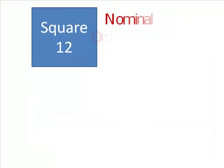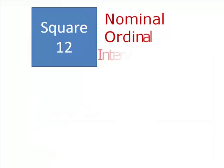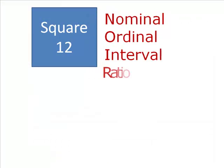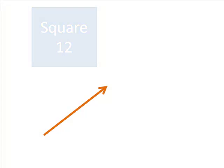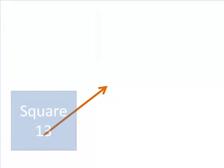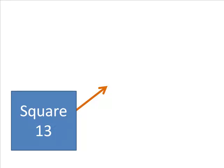In square 12, you determined the level of measurement of each variable. In square 13, you plotted your data, checking for skewed distributions. You made graphs to make sure your variables were normally distributed.